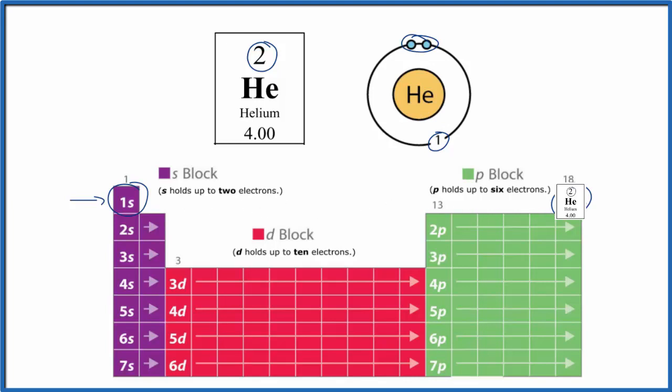Because this first energy level is full, that makes helium a noble gas. We can't put any more electrons in this energy level. It's a noble gas. Other noble gases have eight valence electrons for a full outer shell, but helium is kind of special. It just needs two.